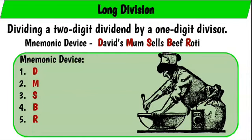Now using the first letter in each of those words in the mnemonic device helps us remember the steps. And the letters are D, M, S, B, and R.